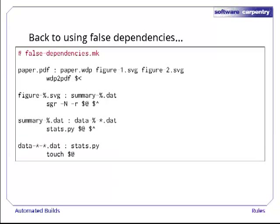If we really want to avoid making summary1.dat and summary2.dat depend on stats.py separately, the only way is to go back to the false dependencies we introduced in the previous episode. This MAKE file tells MAKE to update the timestamps on the raw data files using touch whenever stats.py changes. This indirectly triggers the re-creation of the summary files. It does what we want, just in a roundabout way.